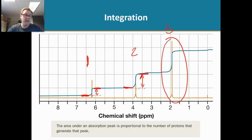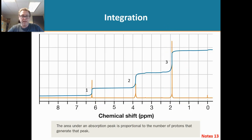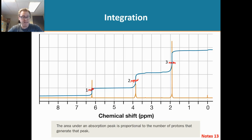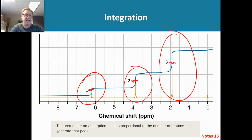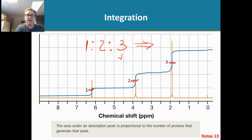The measurement units don't matter — inches, centimeters, millimeters — as long as each measurement uses the same unit. So you measure those out and, for example, you get one millimeter, two millimeters, and three millimeters. That is not necessarily saying this is one hydrogen, this is two, this is three — it is a ratio or proportion: one to two to three. This molecule could have six hydrogens total.